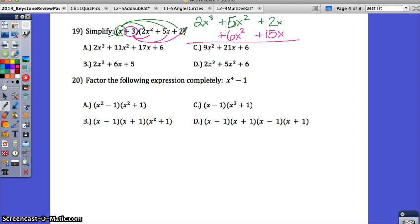Positive 3 times a positive 2 gives me a positive 6. There's no constant, so I'll just tack this on at the end. Now I can just add these two columns together. So 2x³, there's no like terms with that, so I'm going to have just 2x³. 5x² plus 6x² gives me a plus 11x². 2x plus 15x gives me a plus 17x. And then the plus 6 is tacked on at the end. So your correct answer is A.